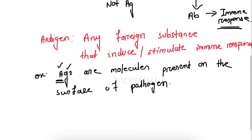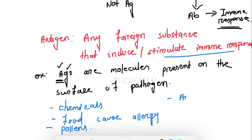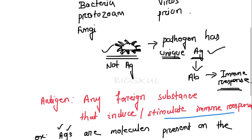Its primary role is to stimulate the immune response. Even foods that cause allergies are also antigens. Antigens are mostly present on microorganisms, but other substances like certain chemicals, foods that cause allergy, pollens, and autoimmune diseases — these are also antigens.